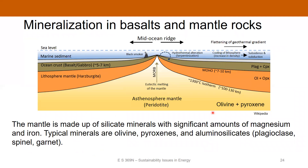At a mid-ocean ridge in the middle of the ocean where two tectonic plates are spreading apart, the mantle comes up almost to the surface and melts through eutectic melting of an assemblage of minerals, producing new oceanic crust. The crust gradually spreads away from the mid-ocean ridge as more crust is created. The mantle is made up of silicate minerals with a lot of magnesium and iron — typically olivine, pyroxenes, and various aluminum silicates including plagioclase feldspar, spinel, and garnet.